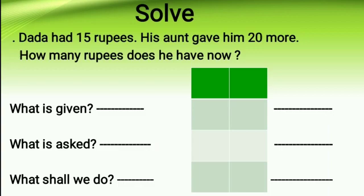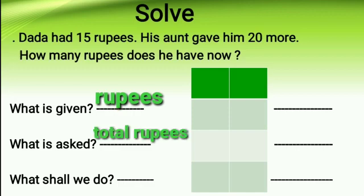Let us read our first story. Dada had 15 rupees. His aunt gave him 20 more. How many rupees does he have now? We need to understand the question and the information which is given. What is given? Rupees. What is asked? Total rupees. What shall we do? We are going to do addition.